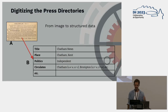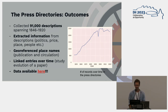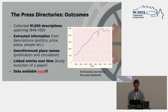In the project, we spent quite some time digitizing those press directories — going from images to a structured version — so we could use this for our analysis. This data is now available online. We gathered around 90,000 descriptions of newspapers between 1846 and 1920 — these small profiles or descriptions of newspapers. We extracted information like politics, price, place, and also did georeferencing and linking entries over time. All this data is now available on the British Library repository.